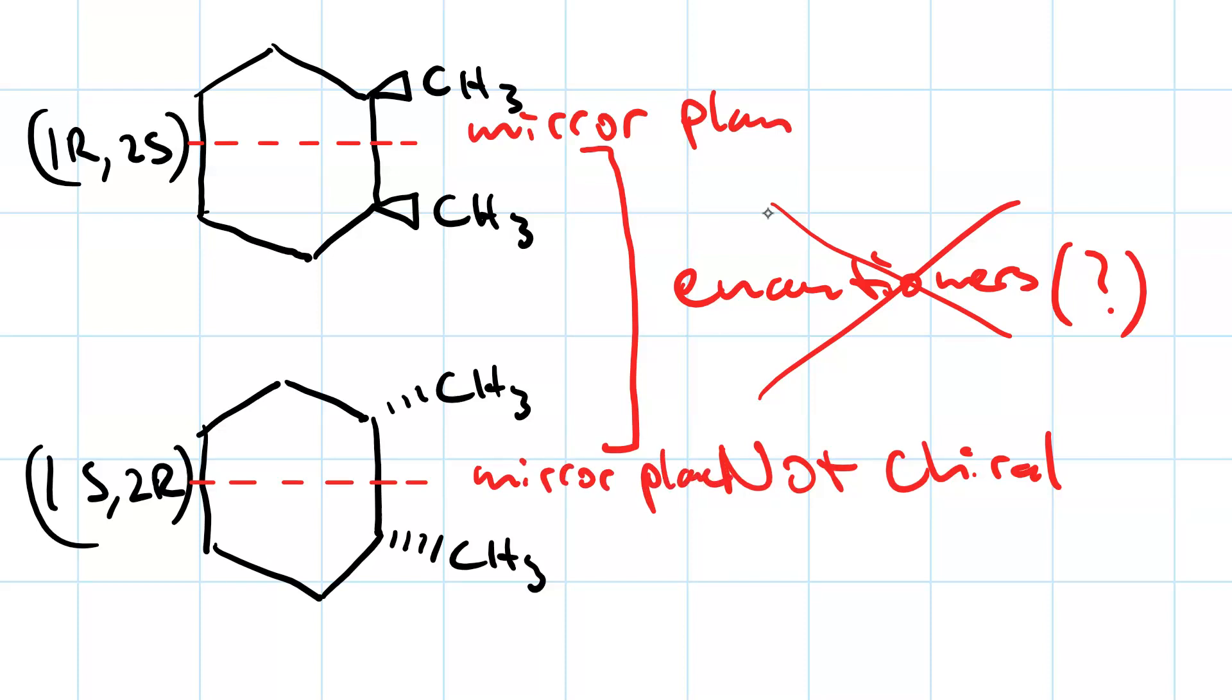And if you reflect the molecule through that mirror plane, you get the identical image. And you can also see this if, instead of numbering clockwise, 1,2, we numbered counterclockwise, 1,2, well then, look what we'd get.